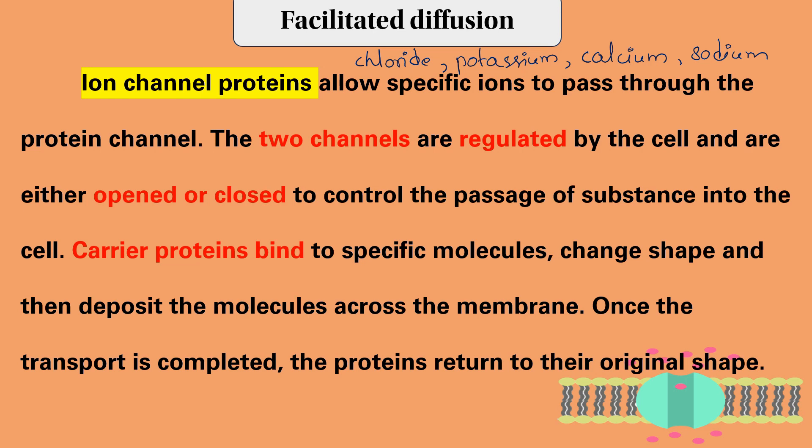Carrier proteins bind to specific molecules such as glucose and amino acids. They are integral proteins in the membrane. They change shape and then move the molecule across the membrane. Once the transport is completed, the protein returns to its original shape, ready for another transport cycle.